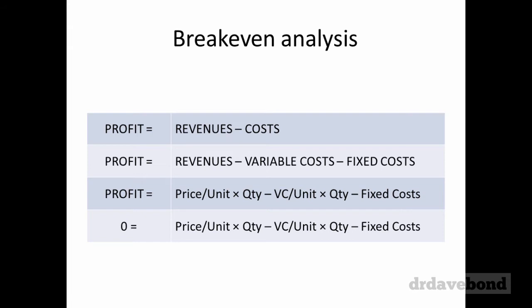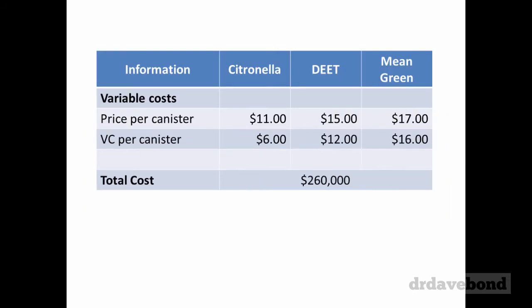The way, at least with a couple of products, we can do this is to work out a weighted average contribution margin. When we look at this we have three products: Citronella, DEET and Mean Green. We have a price per canister of $11, $15 and $17, variable cost per canister of $6, $12 and $16, and total fixed costs of $260,000.